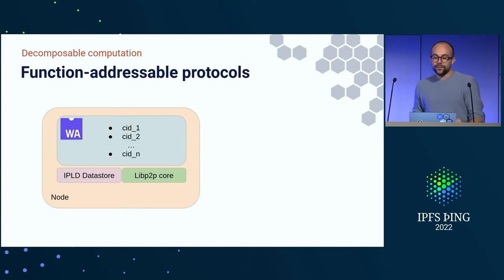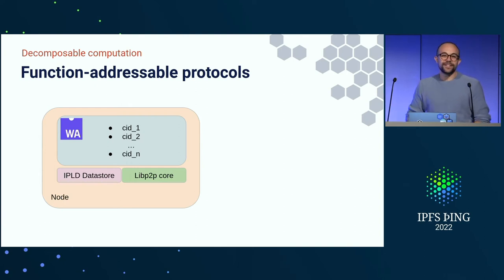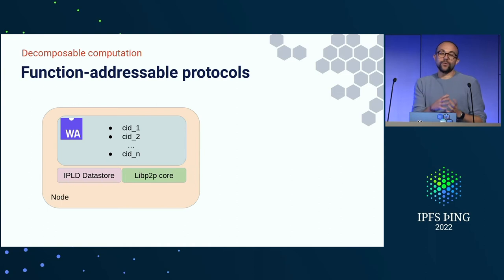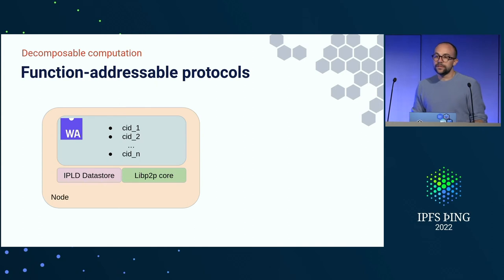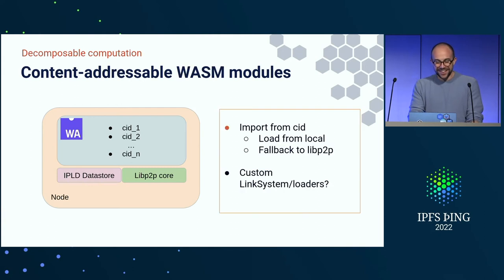The idea is to have function-addressable protocols — the same way we can fetch and perform computation from the network and execute them in your node. What if we could determine the behaviors of our nodes through CIDs? Like, I want to run these three protocols, I mark the three CIDs and I'm running. An upgrade would be as simple as pointing to another CID. I'm oversimplifying, but I'd love to see how it works under the hood.